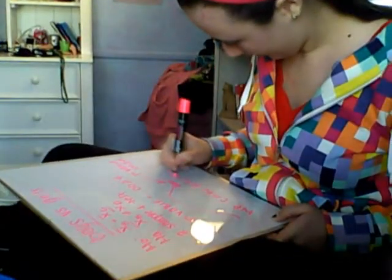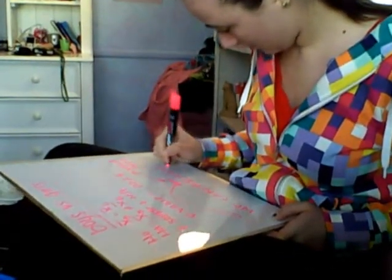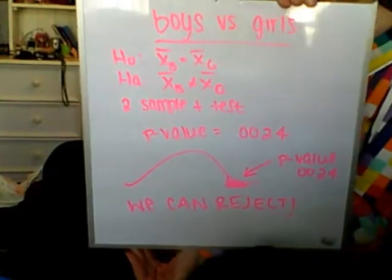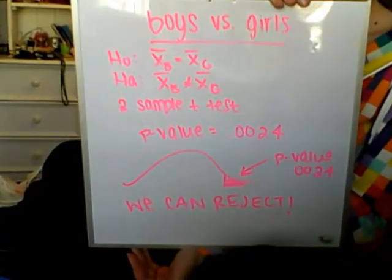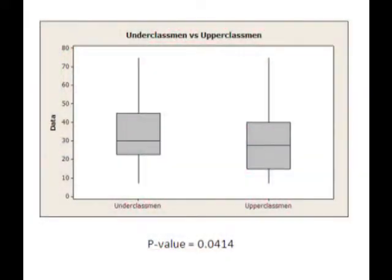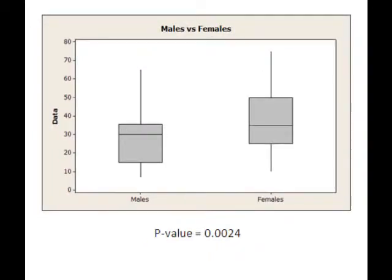Of the 12, we found 3 to be significant at the .05 level. To be significant, the p-value found from the test must be less than .05. If it is significant, then we have enough evidence to reject the null hypothesis, which means that there is a statistical difference in time between the two categories. However, when we reject the null, we cannot accept the alternative. We can only say there is a difference.